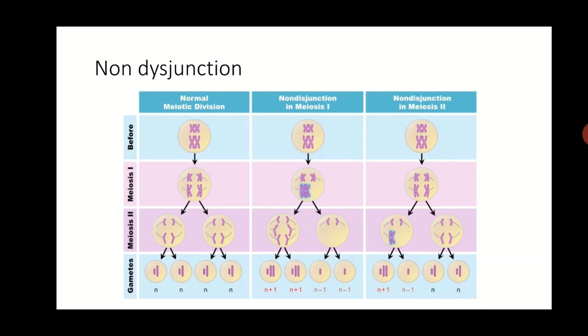The same outcome can occur if non-disjunction happens in meiosis 2. In that case there will be four gametes: one with an extra chromosome, one with one chromosome less, and two gametes with a normal number of chromosomes.